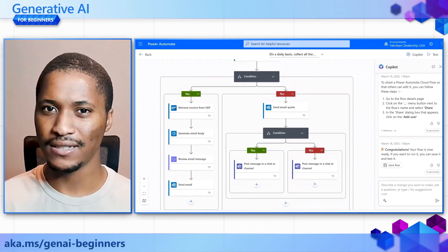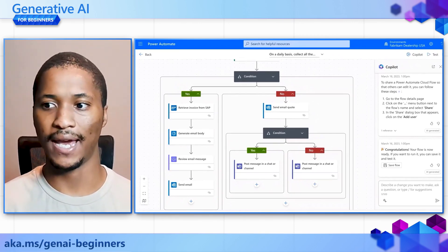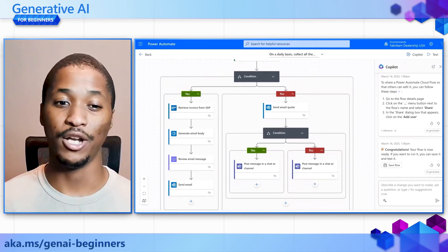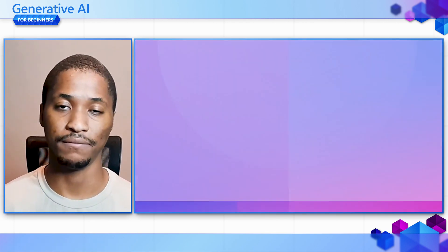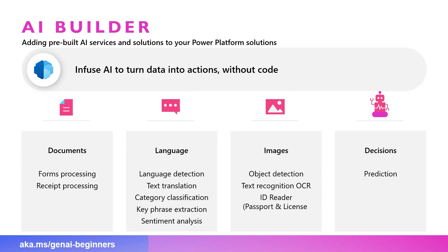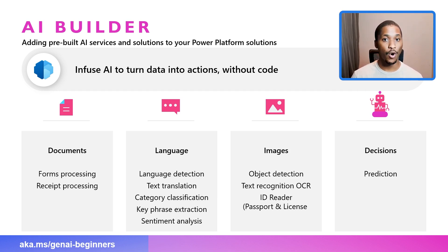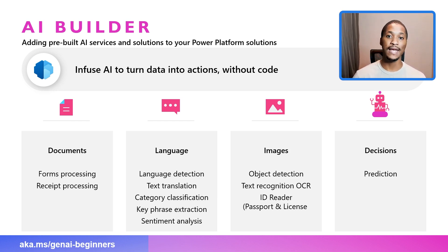But is that all you can do with Generative AI in the Power Platform? No. Let's look at other AI capabilities by exploring AI models and Gen AI with AI Builder. AI Builder enables you to infuse AI to turn data into actions without writing any code. You can process documents — forms, receipt processing, language detection, text translation, category classification — and work with images using object detection or text recognition OCR.